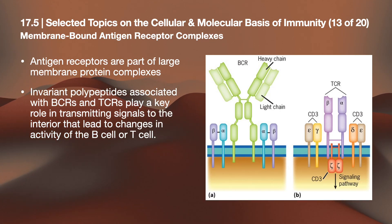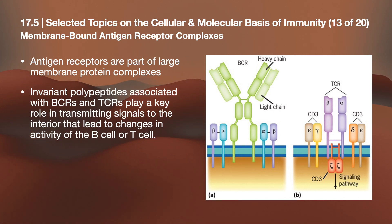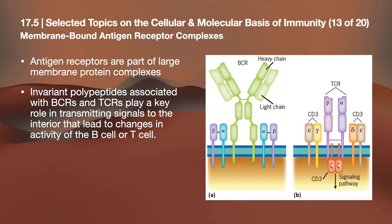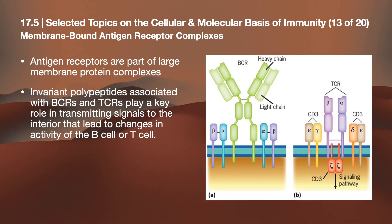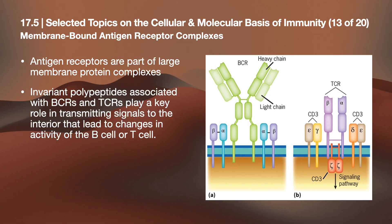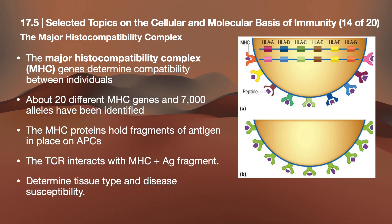For membrane-bound antigen receptor complexes: antigen receptors are part of large membrane protein complexes. Polypeptides associated with BCRs and TCRs play a key role in transmitting signals to the interior of B or T cells, leading to changes in their activity. The structure of the antigen receptor of a B cell includes a pair of invariant alpha chains and a pair of invariant beta chains; in a T cell, an alpha and beta polypeptide chain linked by disulfide bridges.